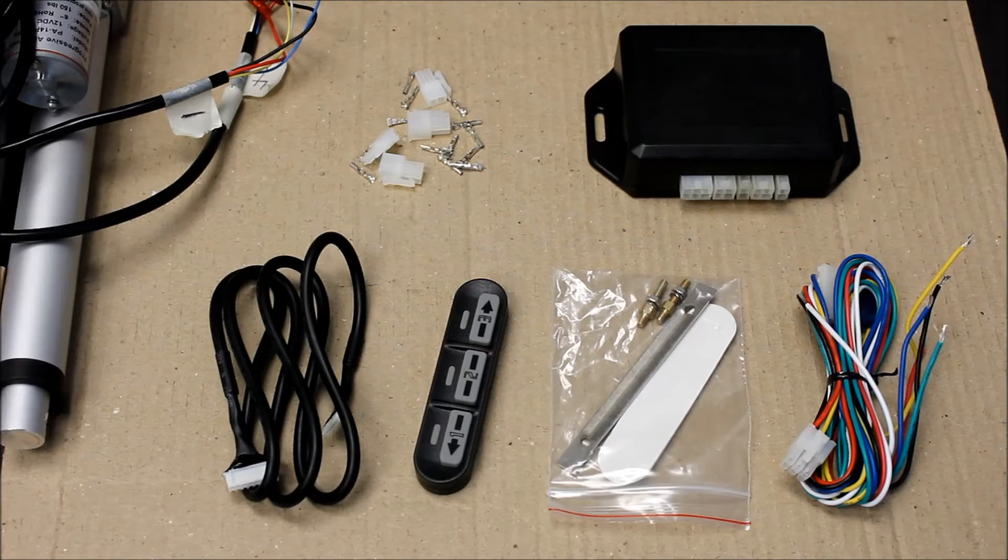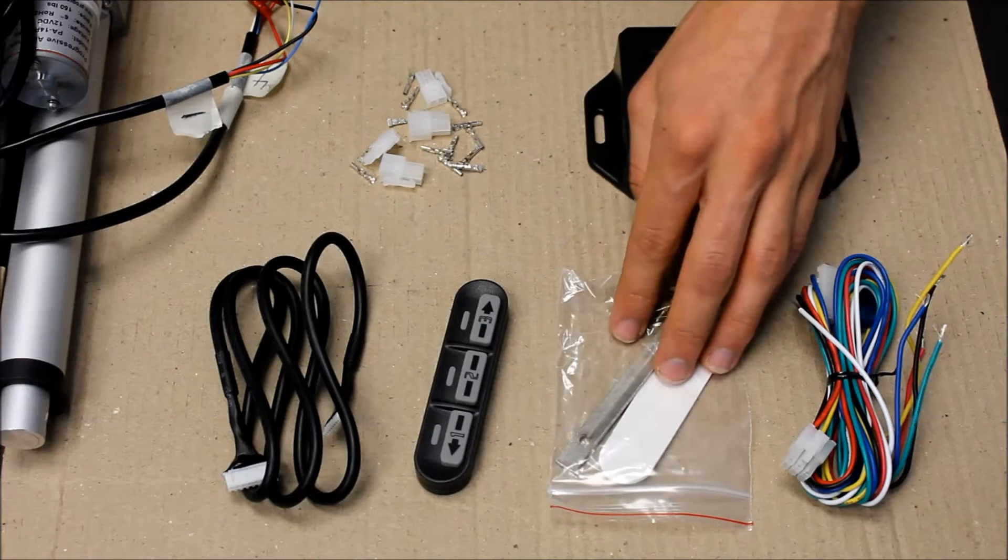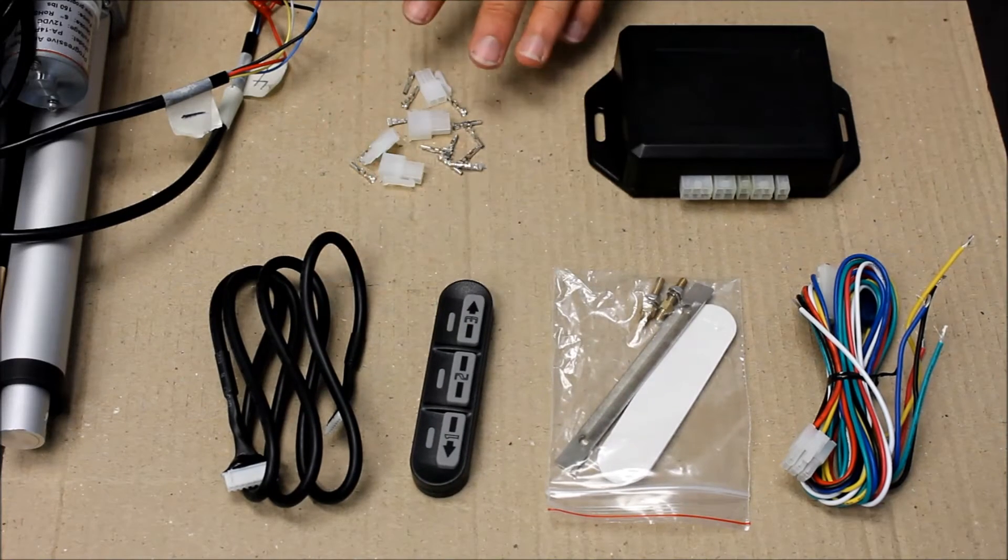These are all the parts included with the PA39. We have our control box, a wiring harness, a mounting bracket, a control pad, and the actuator connectors.